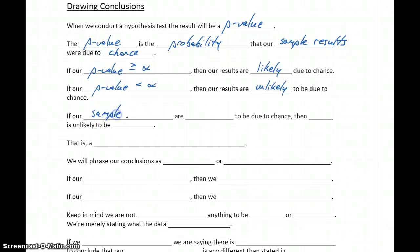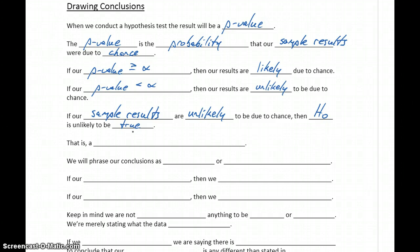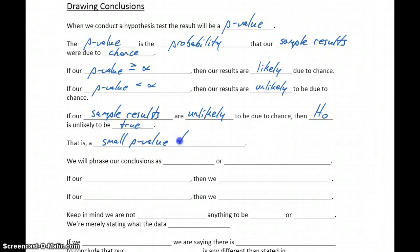If our sample results are unlikely to be due to chance, then our null hypothesis is unlikely to be true. Essentially, we have sample data that conflicts with the null hypothesis. Is that enough evidence to throw out the null hypothesis? A small p-value discredits H0, that null hypothesis.